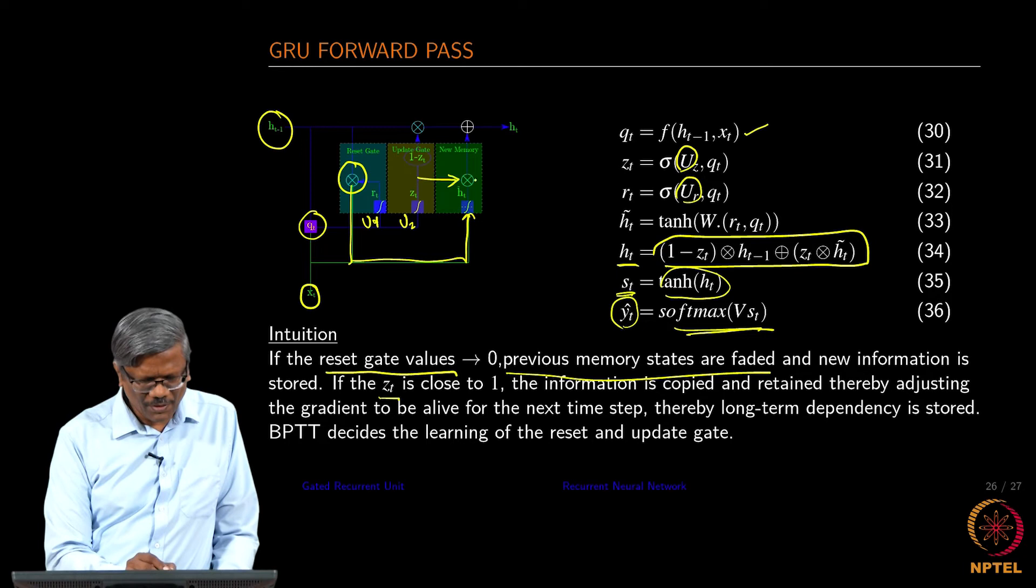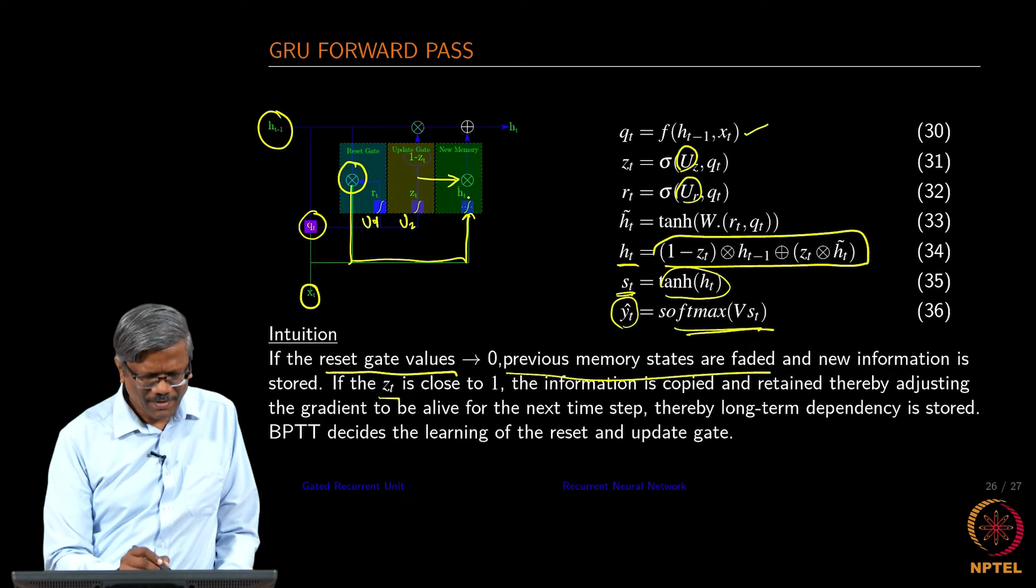And then that is what happens when the values are very close to 0 - h_t is going to be maintaining that value.